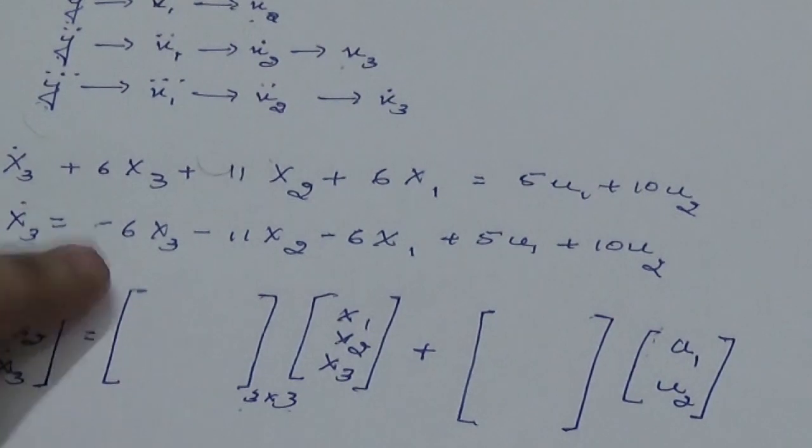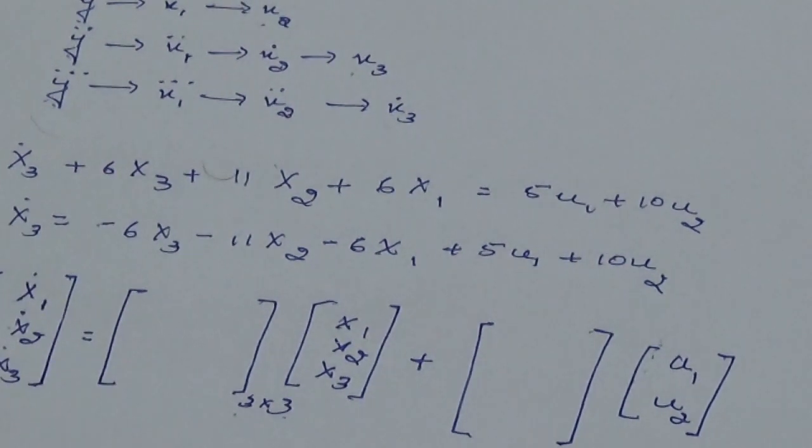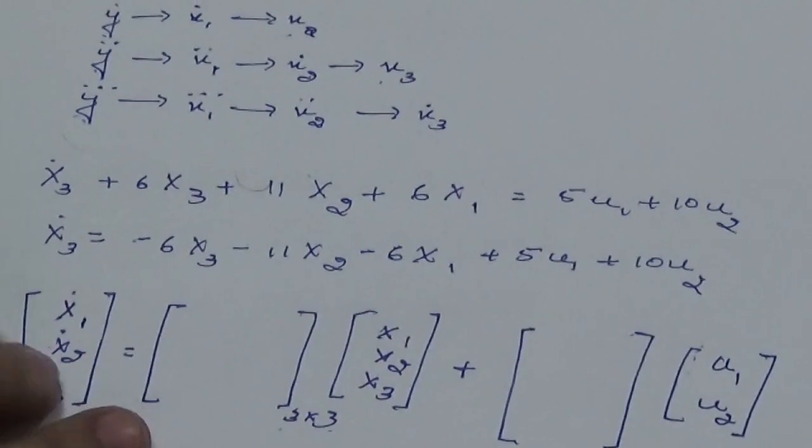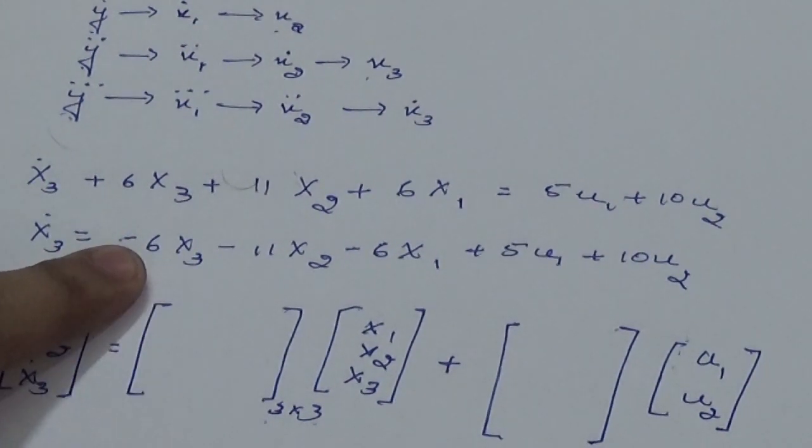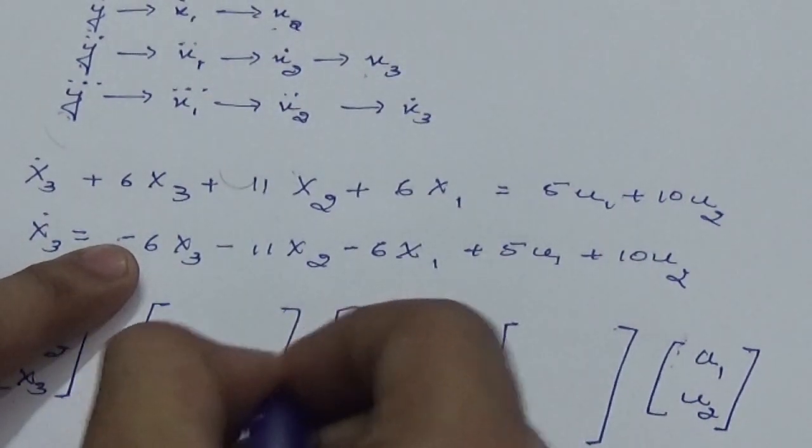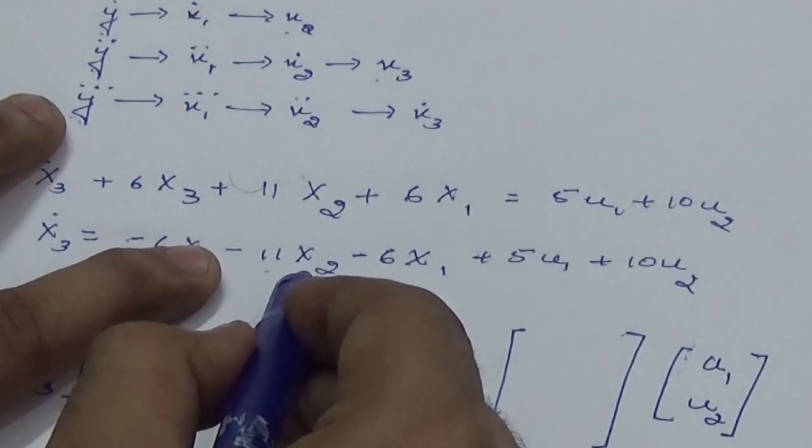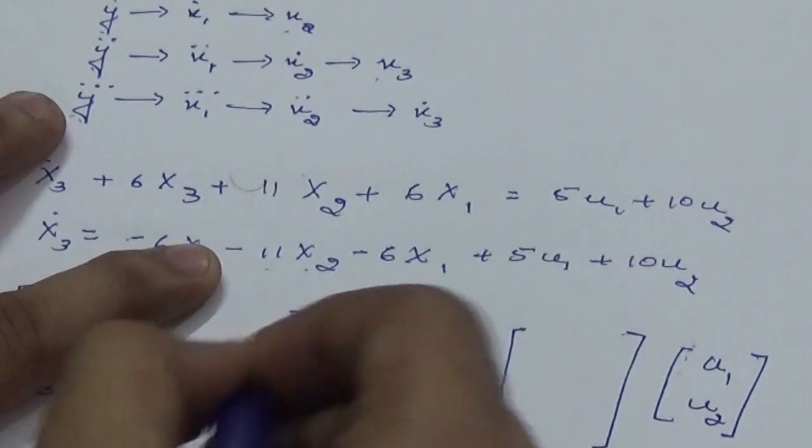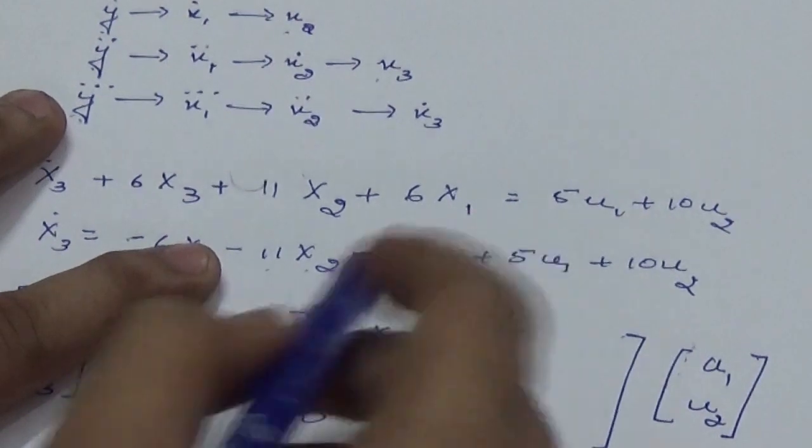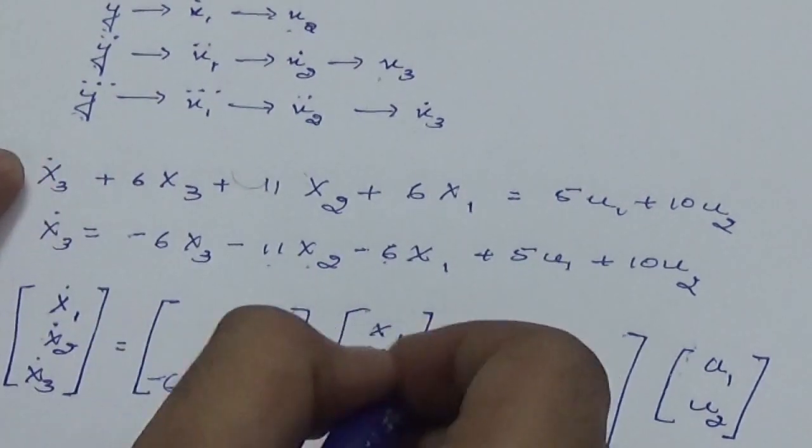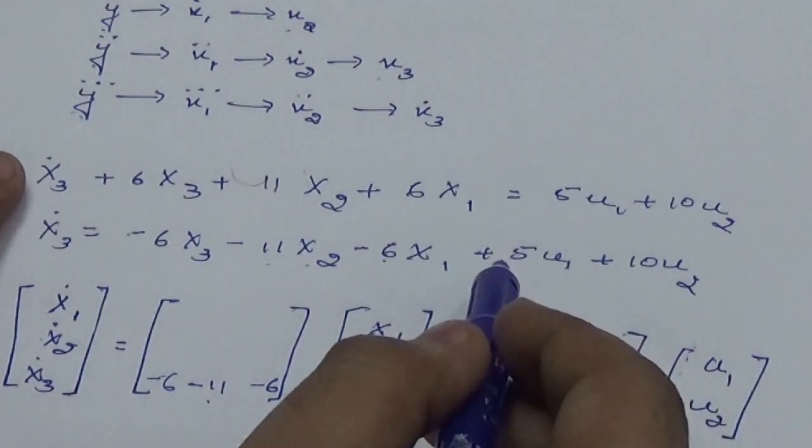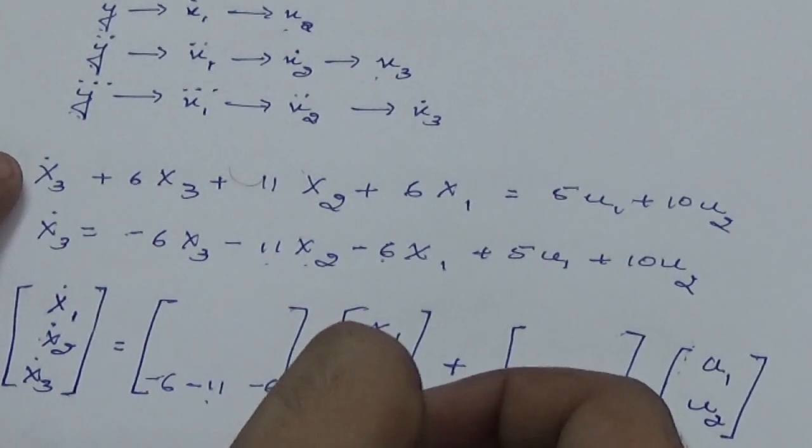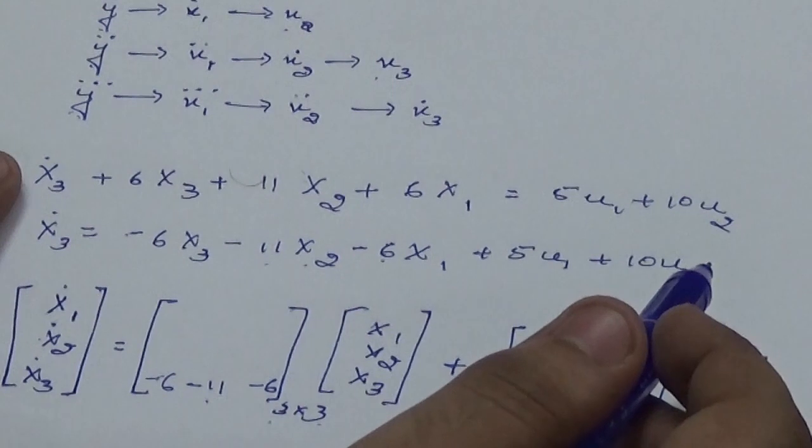Now for the expression which I have obtained, that is for x₃ dot, I would be writing the lowest column for it so that when I multiply I would be getting the expression for it. Now x₃ is multiplied by -6, so therefore third row third column element will be -6. Third row second column element will be -11. Third row first column element will be -6, so that when I perform the matrix multiplication I would be getting this expression back.